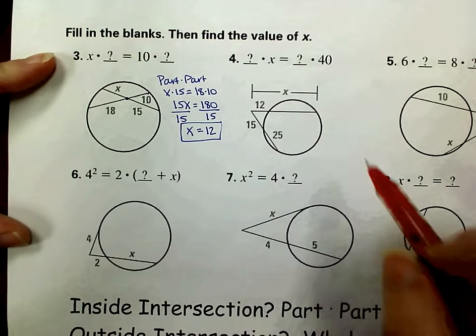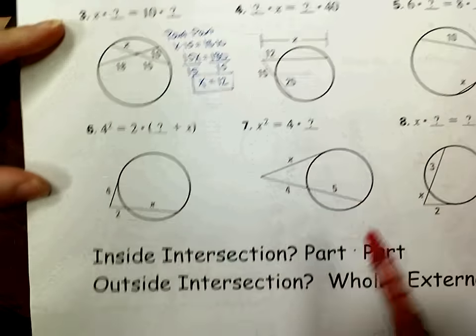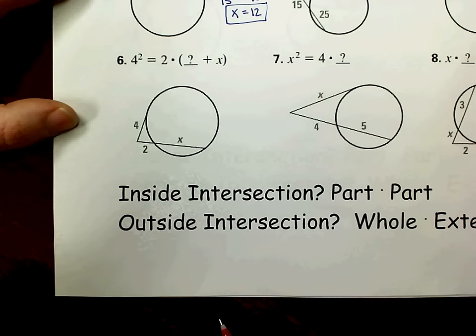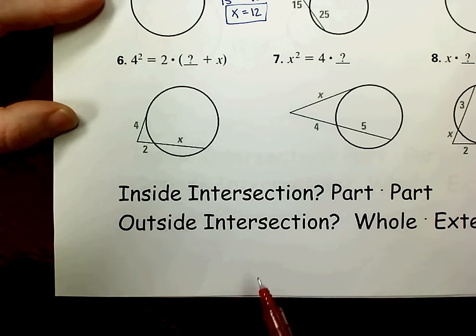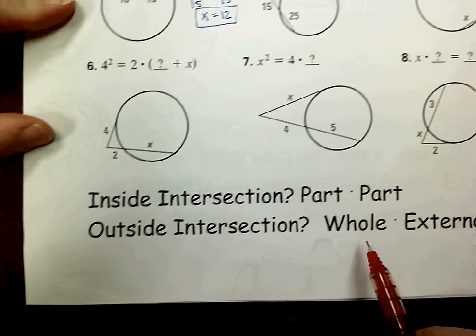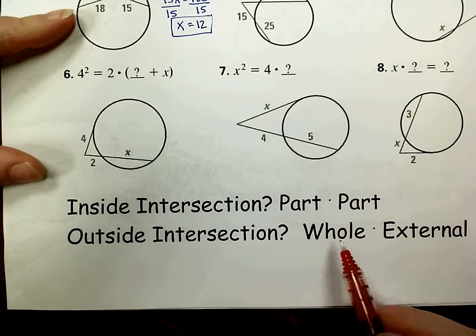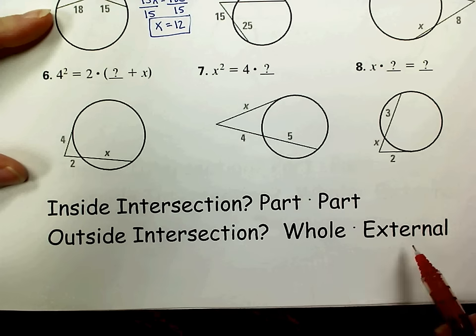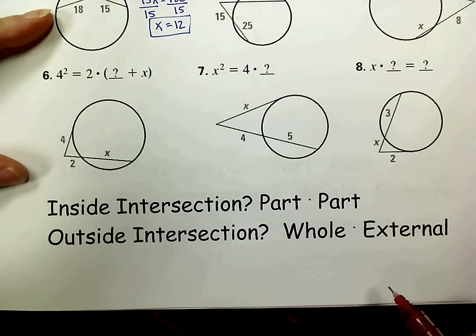On this video, we're going to look at segments that have an outside intersection. So when the segments intersect outside the circle, they always have a whole times external equals whole times external relationship.